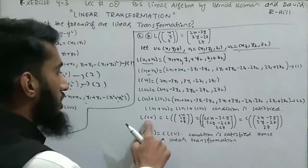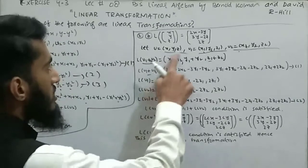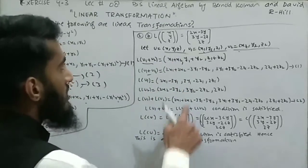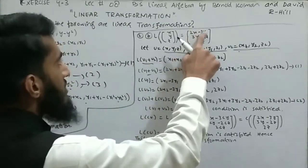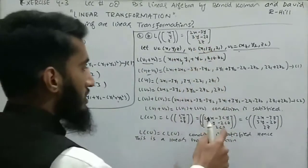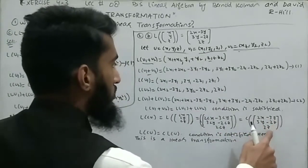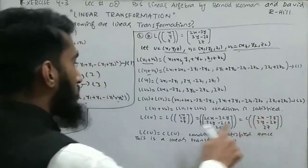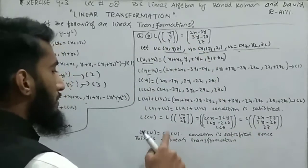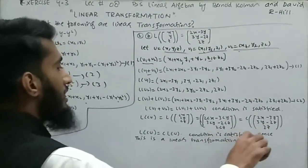For the second condition, L(cu) = cL(u): substitute cx, cy, cz into the function to get (2cx-3cy, 3cy-2cz, 2cz). Taking c common leaves (2x-3y, 3y-2z, 2z), which equals the given L(u). So L(cu) = cL(u). The second condition is also satisfied, meaning this is a linear transformation.